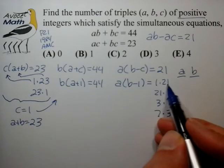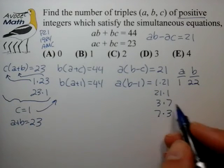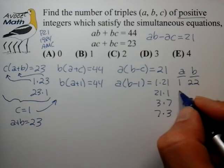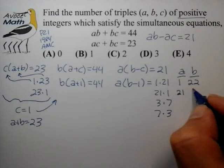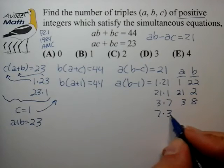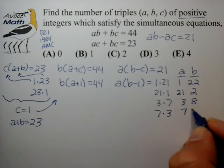So in the case of 1 times 21, a would equal 1 and b would equal 22. For the case of 21 times 1, we find that a would equal 21 and b would equal 2. For 3 times 7, a equals 3 and b equals 8. And for 7 times 3, a equals 7 and b equals 4.